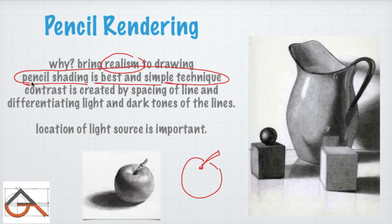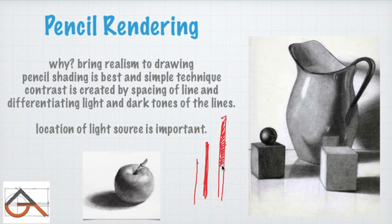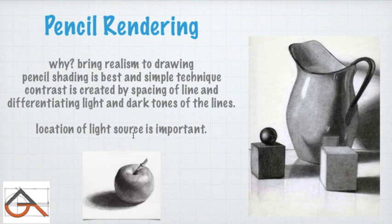Contrast is created by spacing the lines. If you want to create contrast, you differentiate light and dark areas using line spacing — it becomes easy. Location of the light source is very important. When rendering, the examiner checks that your light perception is clear. Light should come from a single source, creating a clear shadow.